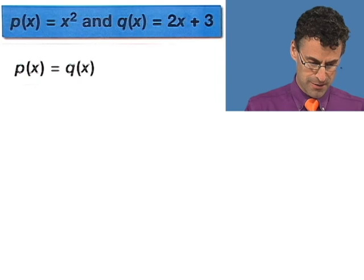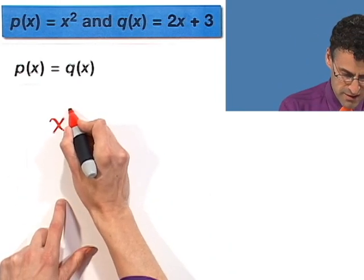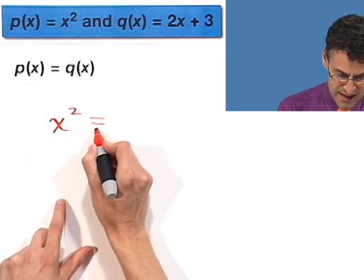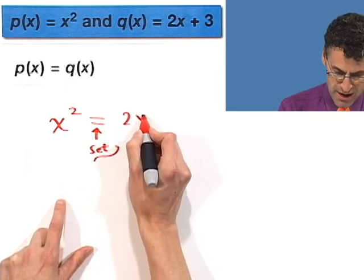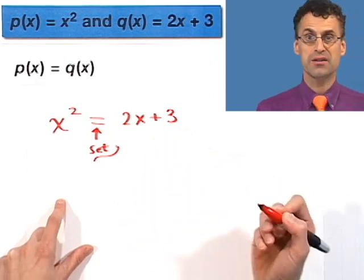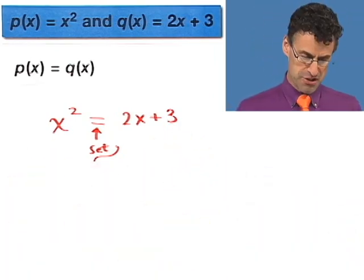So all you do here, couldn't be more fun, take x squared and set it equal to 2x plus 3. And now you solve. Well, now you look at this equation and say, what's going on here?